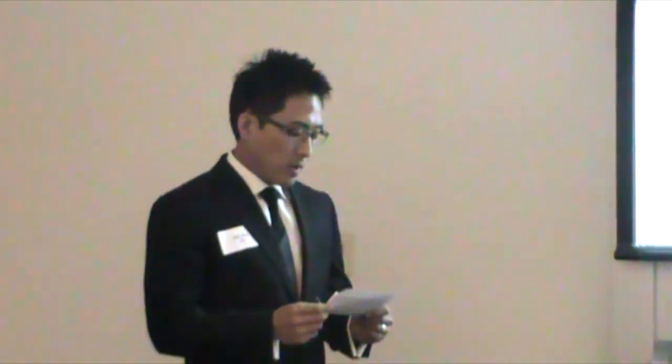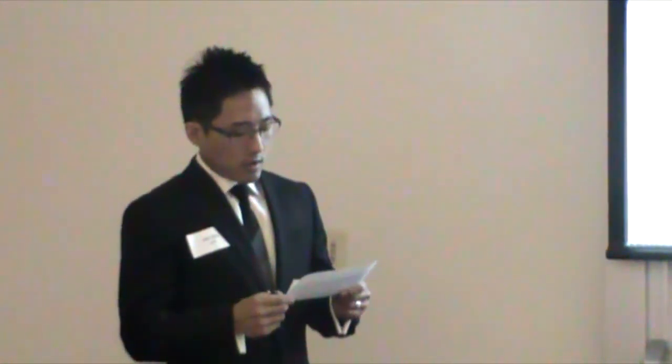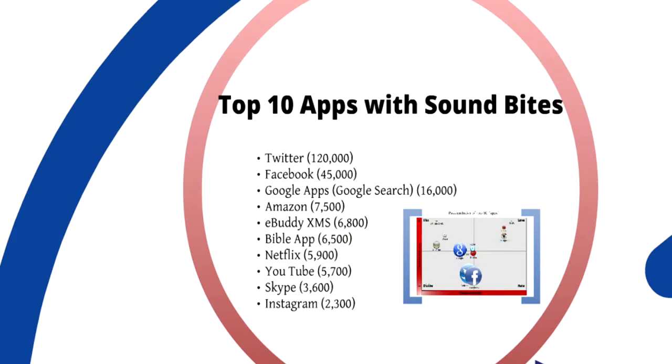Here is how we got the top ten apps from NetBase. The phrase 'the best mobile app' was entered into NetBase. We decided to eliminate the term 'the best' because it would only generate results within specific boundaries, and our team interprets 'top' as 'most mentioned.' So we eliminated descriptive terms like 'the best' and put 'mobile app' as a brand name into NetBase. Here is the list of top ten apps we got: Twitter, Facebook, Google Apps, Amazon, eBuddy XMS, Bible App, Netflix, YouTube, Skype, and Instagram. Now that we had the top ten apps, we needed better insights, so more thoughtful research was done.